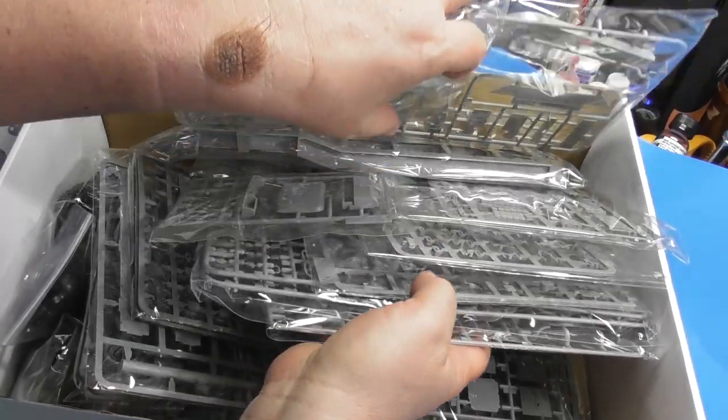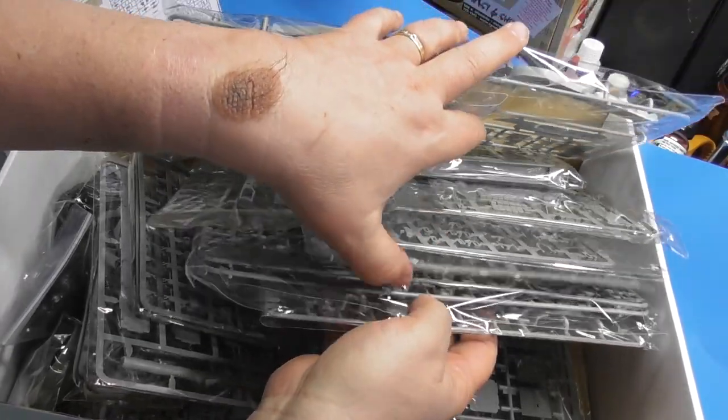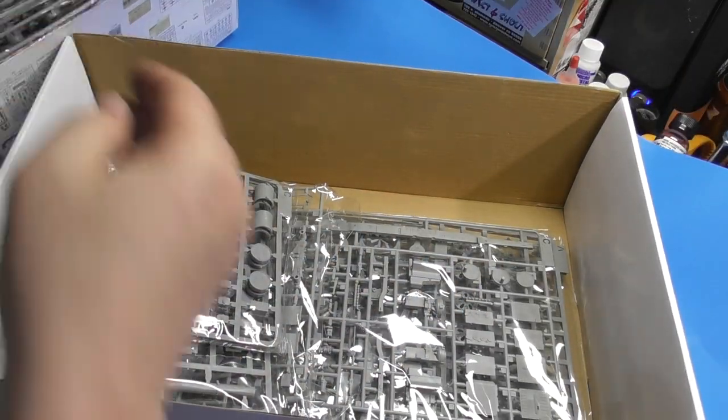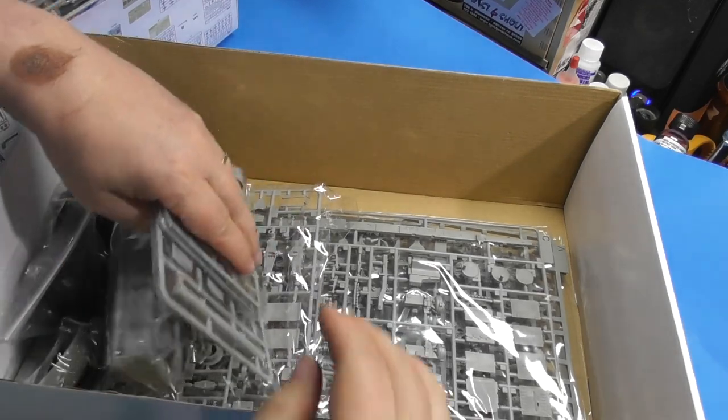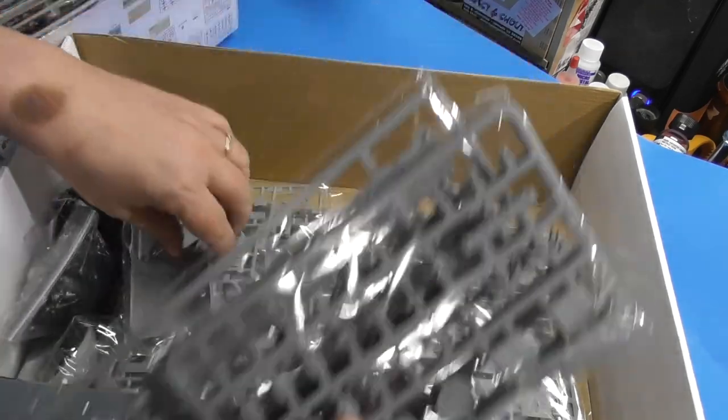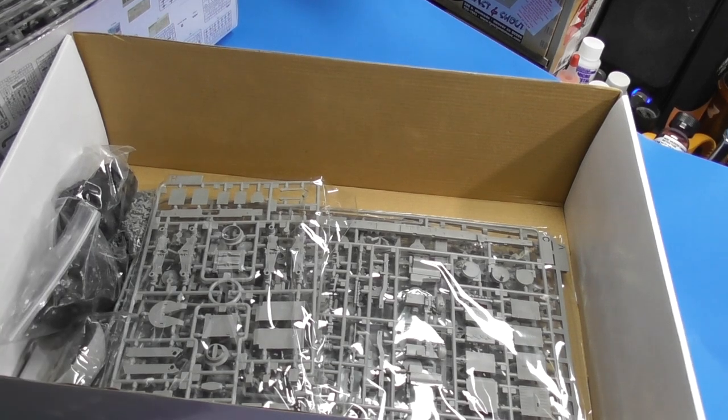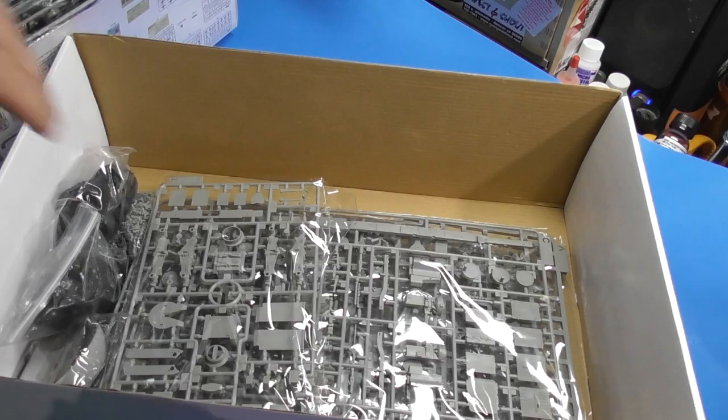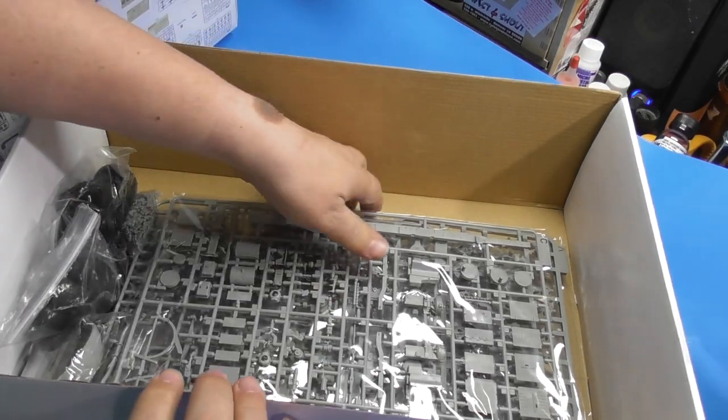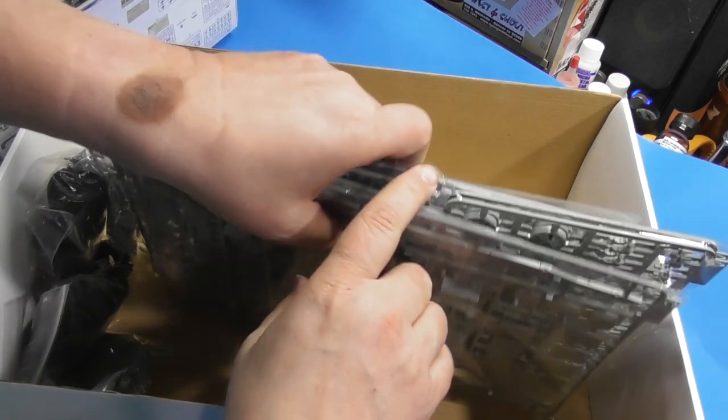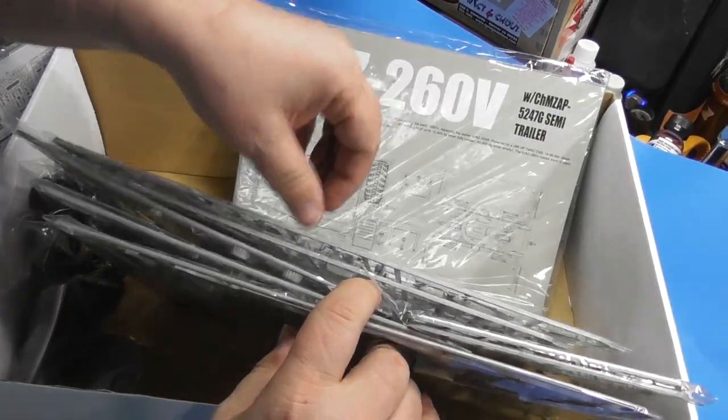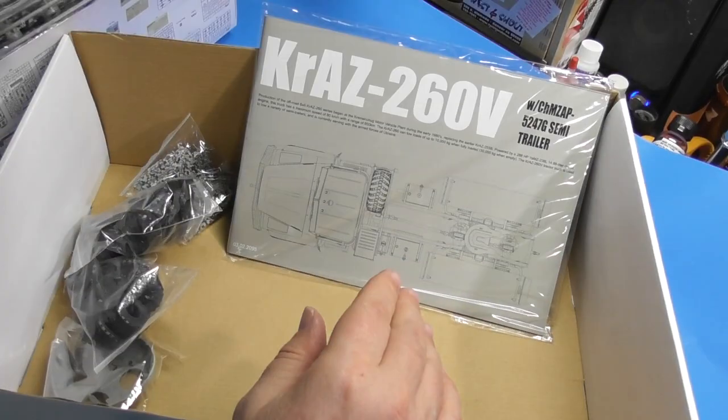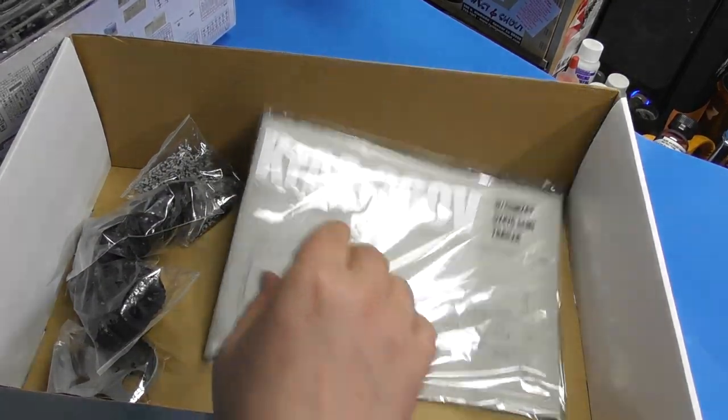There's one, two, three, four, five, six, seven, eight, nine, ten. Eleven, twelve, thirteen, fourteen, fifteen, sixteen, seventeen, eighteen. Many lots of directions. Nineteen, twenty, twenty-one, twenty-two, twenty-three, twenty-four, twenty-five. Twenty-five sprues.